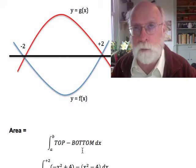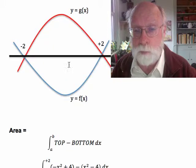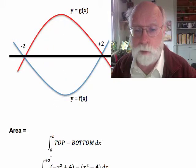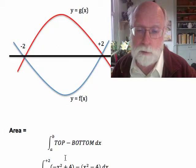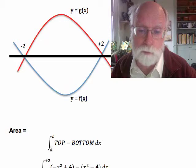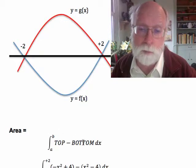So our formula for the area is the top minus the bottom integrated from a to b. Notice that we have now abandoned talking about the x-axis. The x-axis doesn't come into this. We just integrate between the intersection points, the top function minus the bottom function.